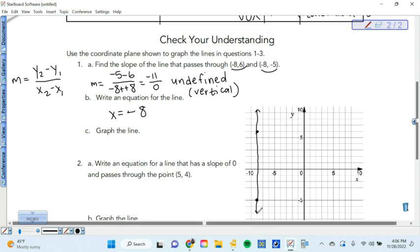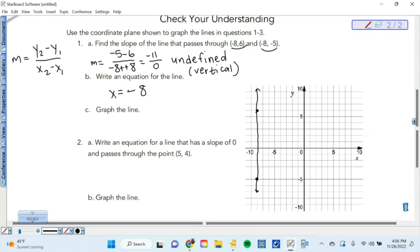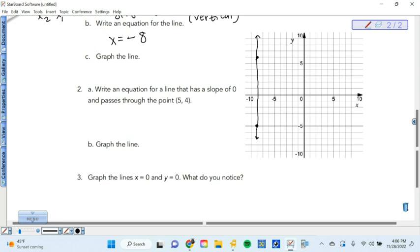And then if you just graph that line, it's right there. Vertical lines are negative eight. Keep on trucking. Let's go.